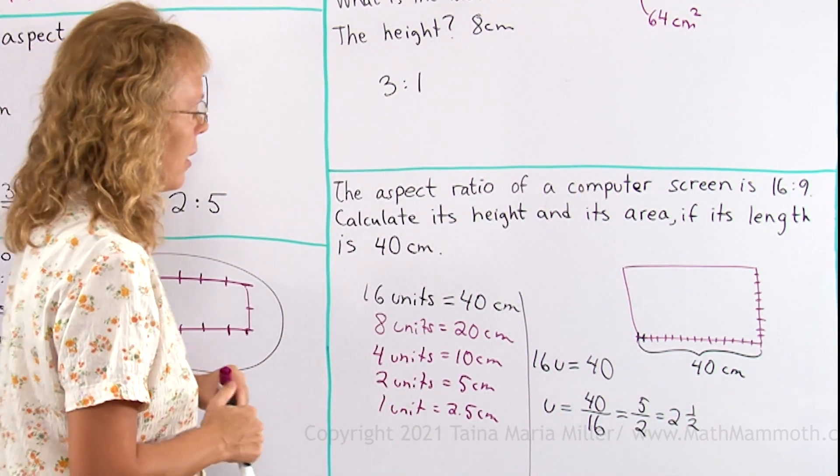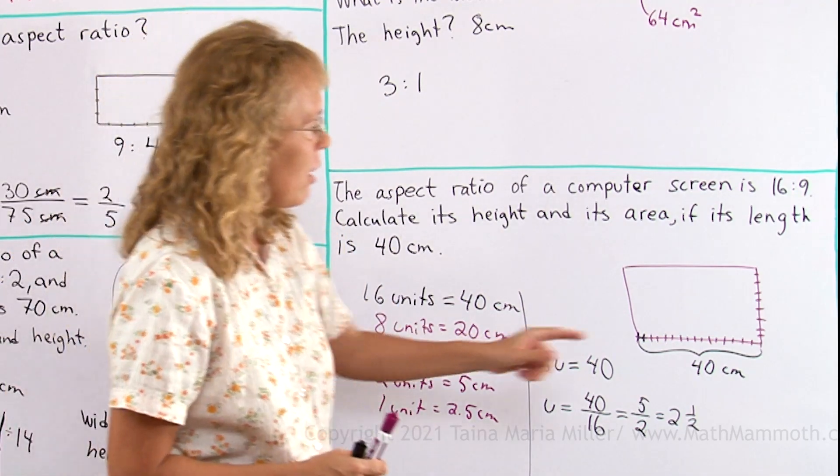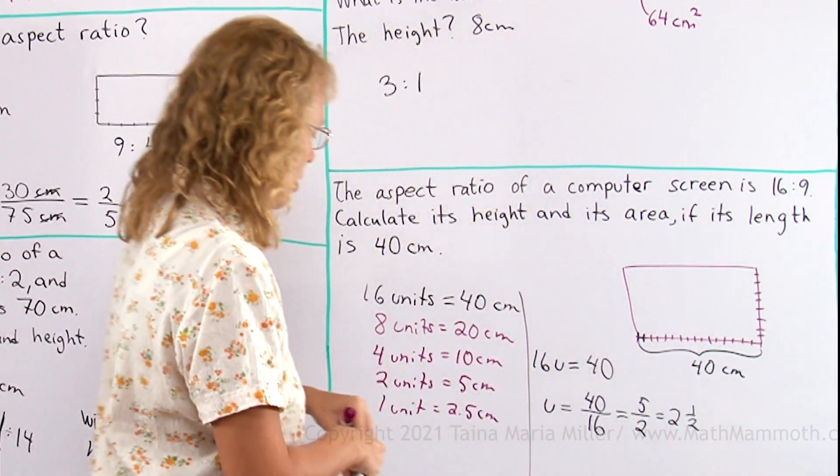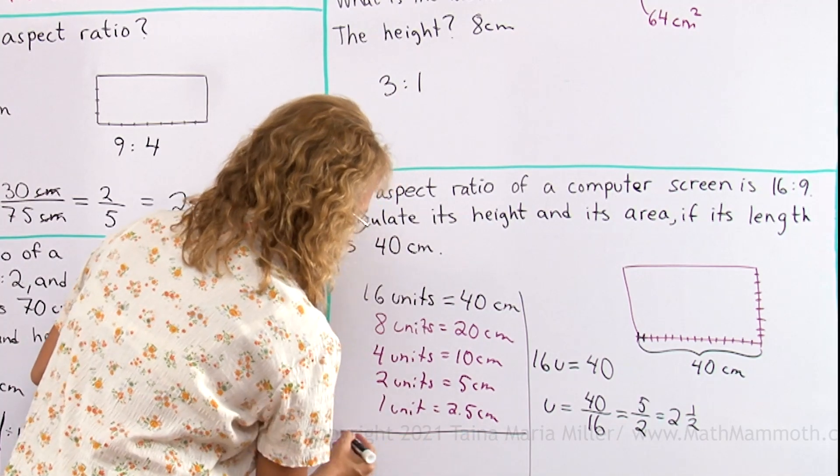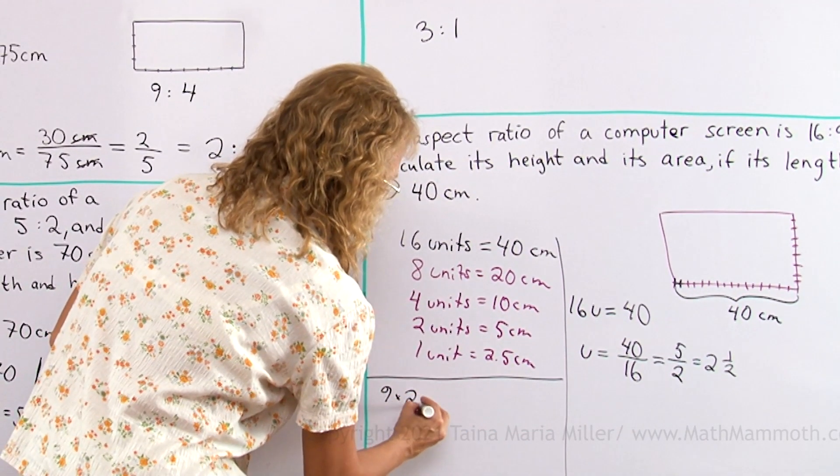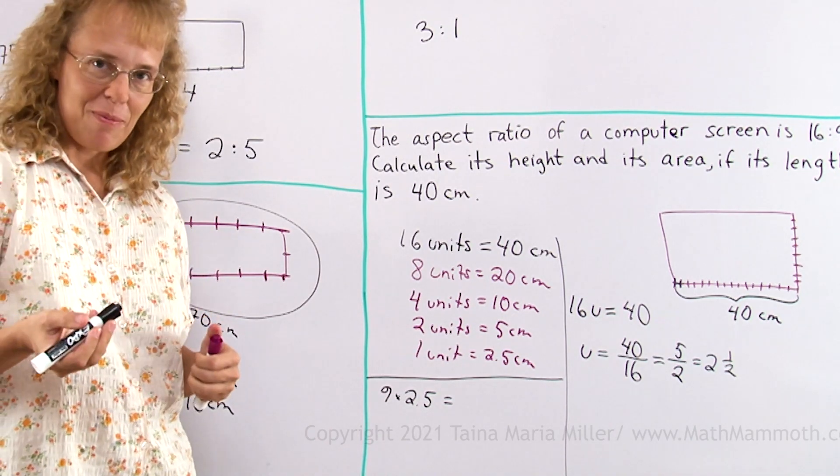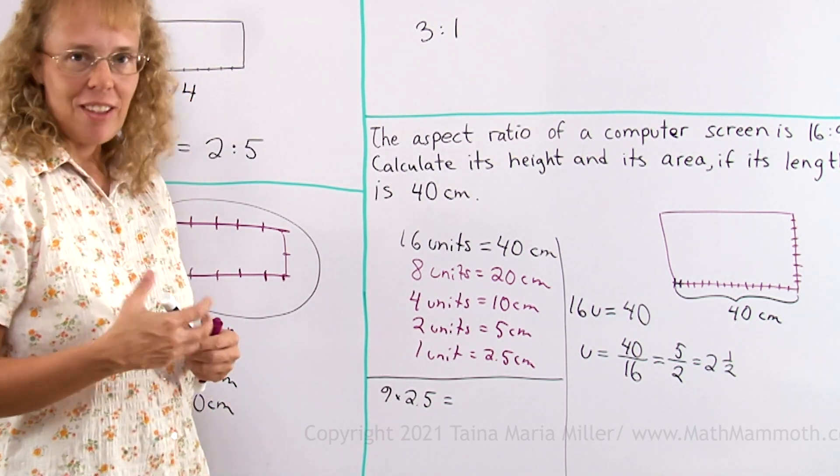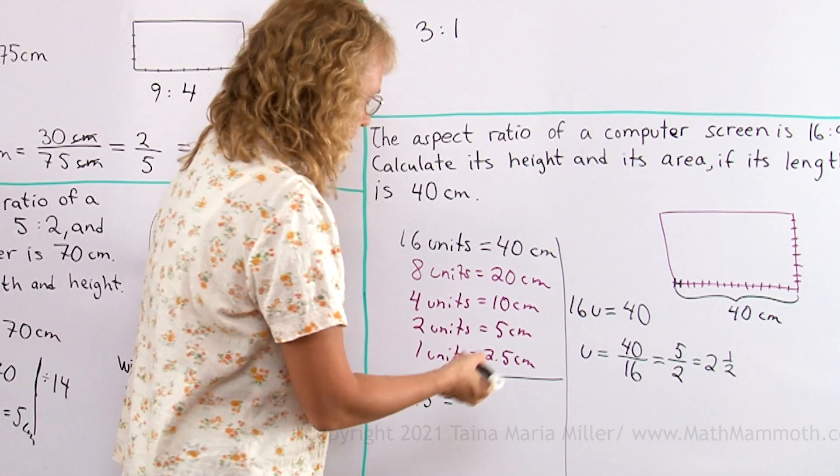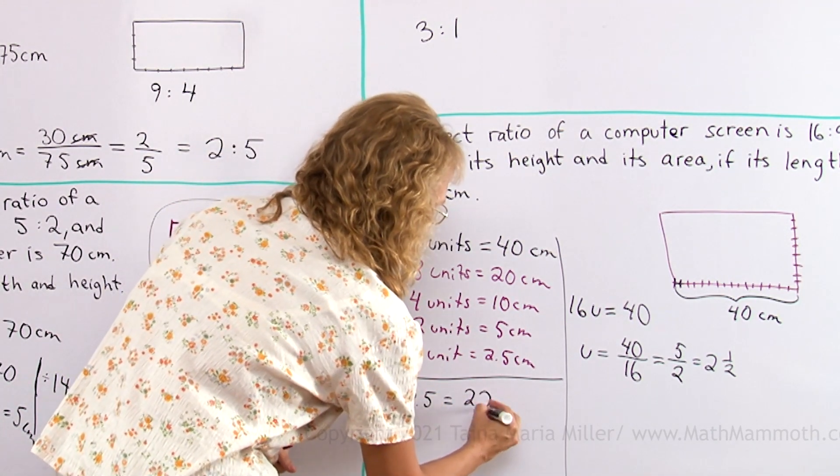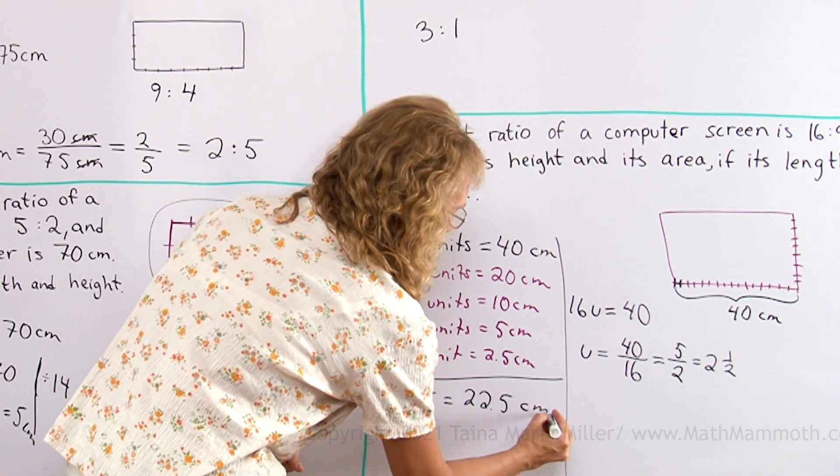Okay. So either way, one unit is 2 and a half. And so now I go here, 9 times 2 and a half. 9 times 2 and a half. 10 times 2 and a half would be 25. So it's just 2 and a half less than that. 25 minus 2 and a half. So it is 22 and a half. And that's centimeters. Okay?